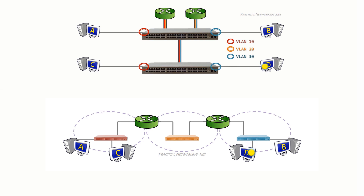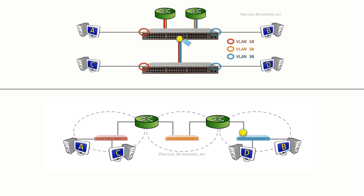The only thing that is different is the physical topology. In the end, one of the key benefits of VLANs is that your logical topology is not constrained by your physical topology. Before VLANs, your physical topology greatly affected your desired logical topology. VLANs eradicated that problem entirely.